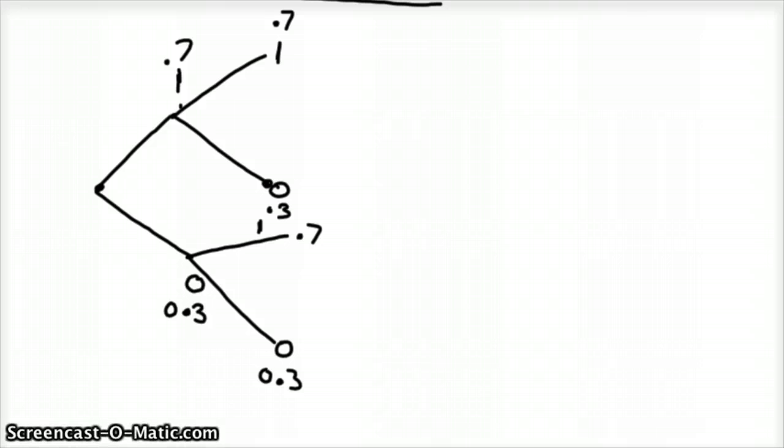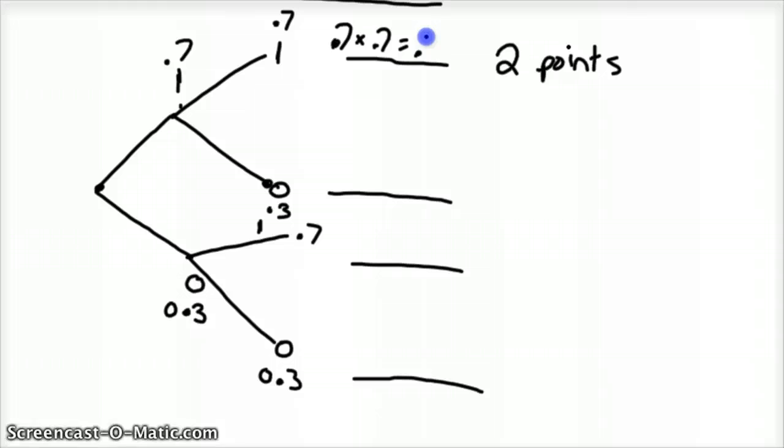So we've got four possibilities here. This would be two points, which would be 0.7 for the first shot times 0.7 for the second shot, which would be 0.49. This one is if you score one point. And you've got 0.3 times 0.7 chance. Oh nope, I went the wrong order for this one. Because the first shot you made it, so you had 0.7 times 0.3, which is 0.21.